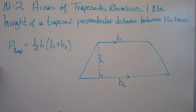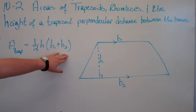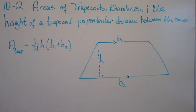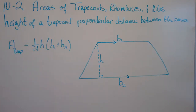Your formula for the area of a trapezoid is one-half the height times the sum of the two bases.